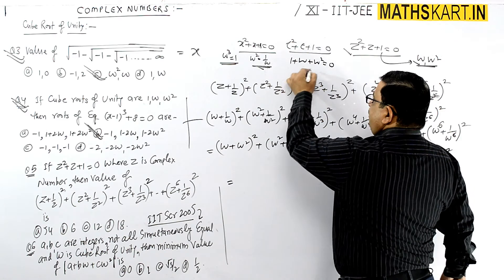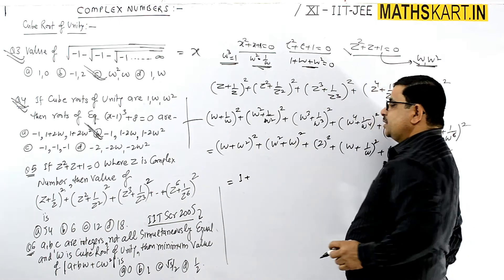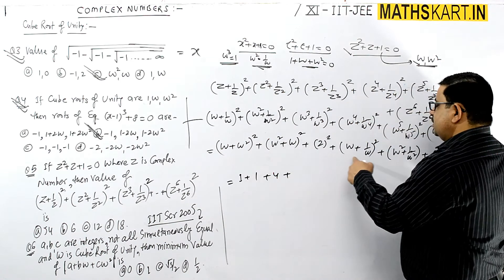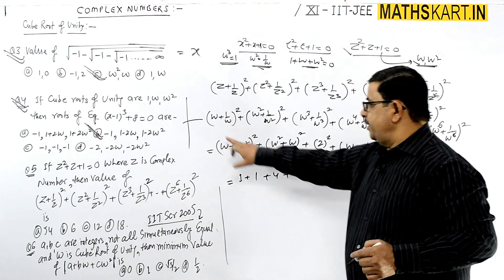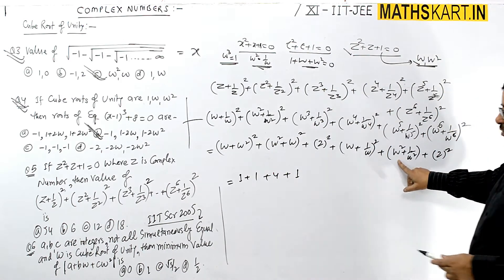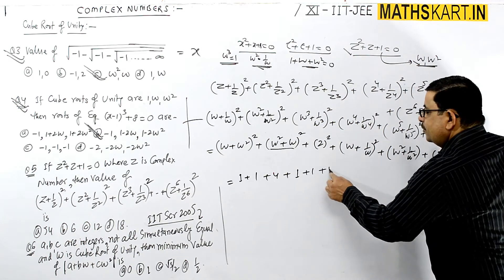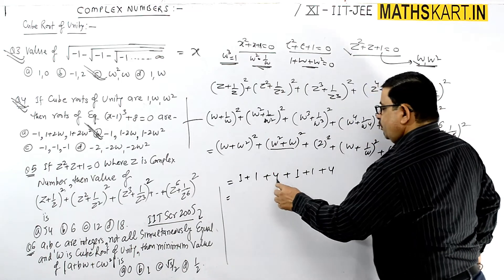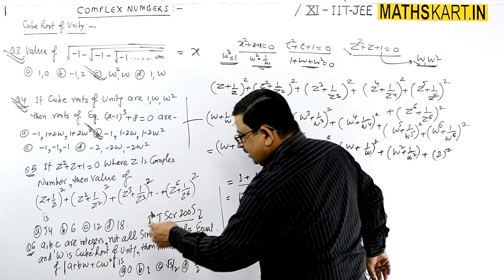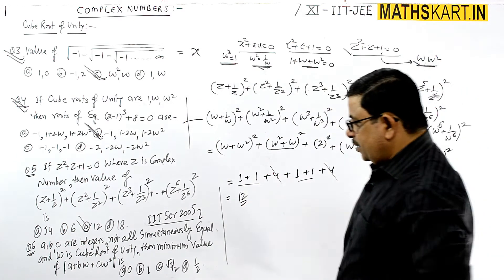Omega plus omega square - we know 1 plus omega plus omega square equals 0, so omega plus omega square equals minus 1. This gives 1 plus 1 plus 4 plus 1 plus 1 plus 4 equals 12. So answer is 12, C option.